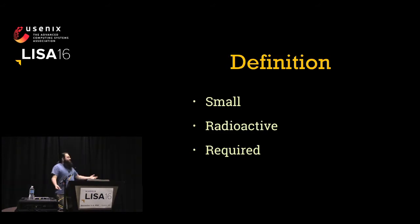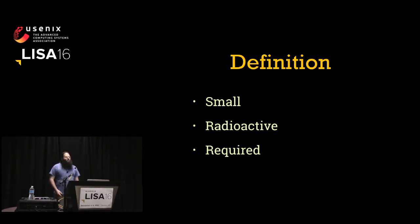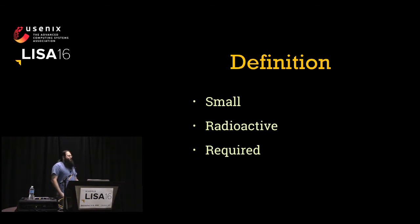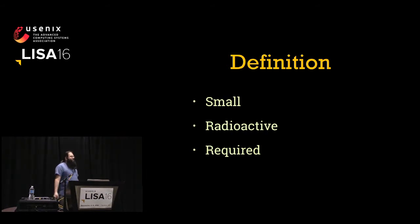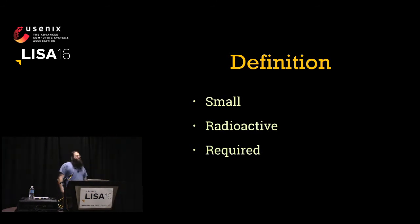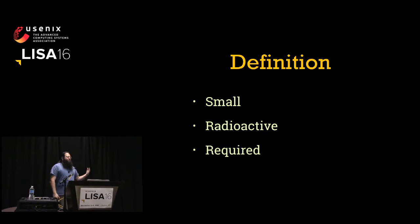What defines a secret in terms of infrastructure? You could treat all private information as secret, but it's going to get unwieldy really quickly. To keep us focused, we're going to use three properties. The first: it has to be small, usually less than a kilobyte. You may control access to much larger amounts of information through things like disk encryption or database encryption, but the secret part is going to be relatively small.